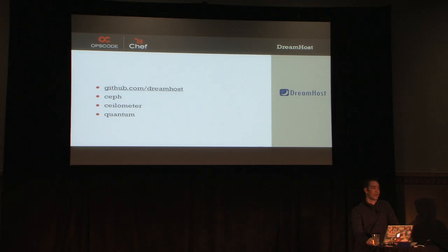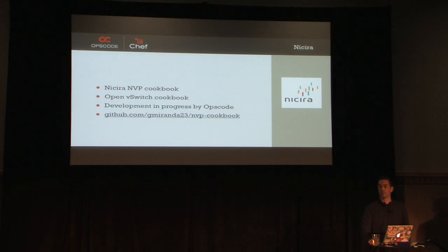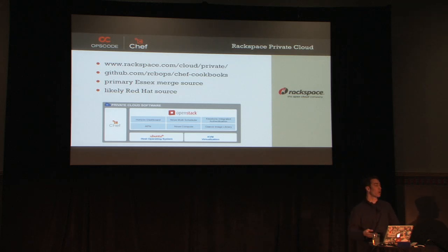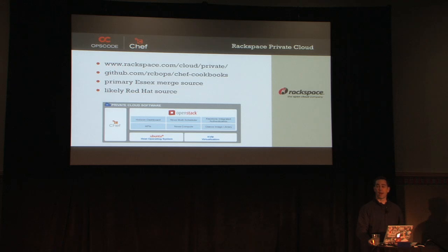DreamHost has all their cookbooks public and has been good about integrating Ceph into what they're doing. They have Ceilometer and Quantum cookbooks as well — they're the source of the Quantum cookbooks we're using. Nicira: we engaged with Nicira to write cookbooks for NVP, and we also have an OpenVSwitch cookbook in progress on GitHub. Rackspace Private Cloud was the original source of the Essex cookbooks that we forked. We'll be talking about Rackspace's cookbooks in a session on Thursday. Likely they'll also be the source of Red Hat support since they're doing a lot of testing with Red Hat. Chef is front and center in their product.